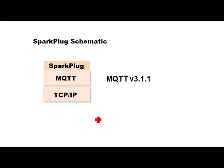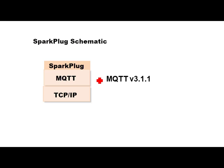This schematic shows where Sparkplug fits in. We have TCP/IP, MQTT sitting on top, and Sparkplug sits on top of MQTT. Obviously Sparkplug is an option — you don't have to use it. You can just use MQTT with your own topic structure, your own payload structure, and implement your own state management.